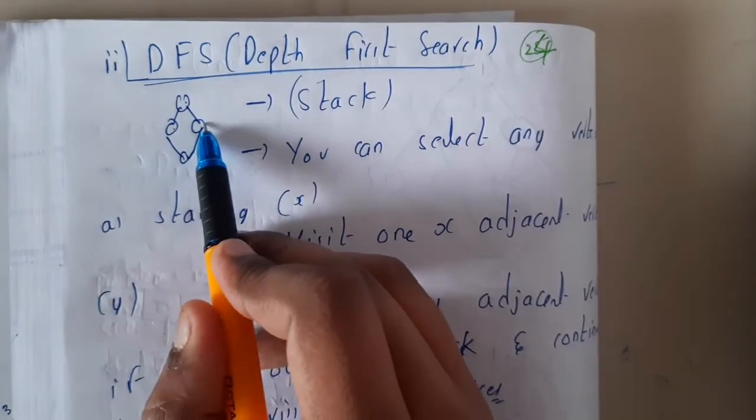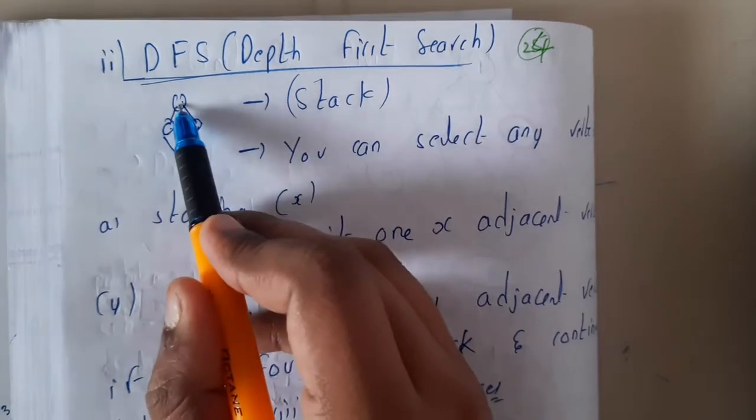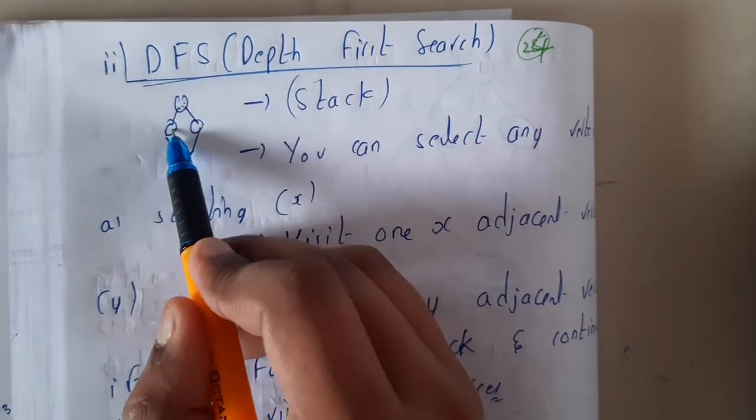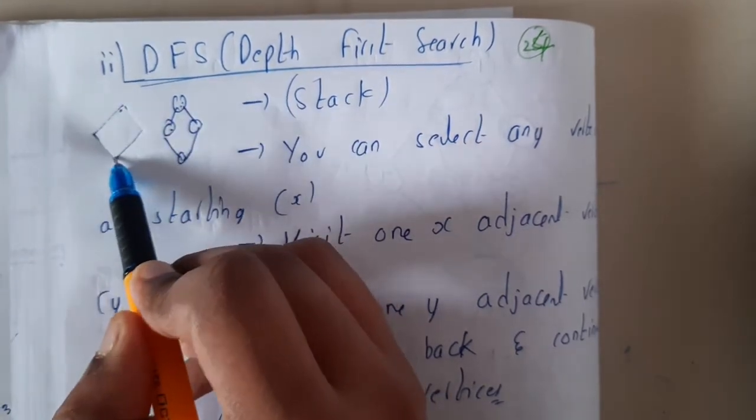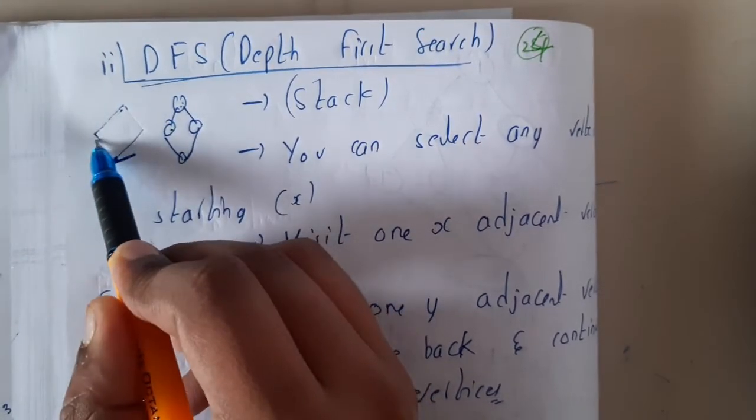If you select a path from here, you will be continuing on that particular path till the end. And if there is no path from there, you will be returning back.